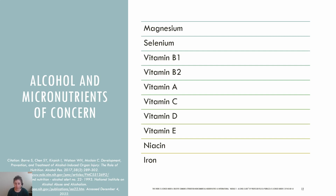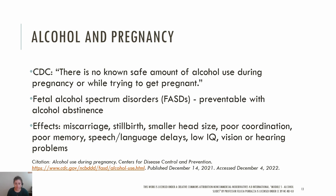Let's talk about alcohol in pregnancy. There is no known safe amount of alcohol use during pregnancy or while trying to get pregnant. Fetal alcohol spectrum disorders are 100% preventable with alcohol abstinence, as alcohol consumption passes through to the baby via the umbilical cord. Consuming alcohol during pregnancy can lead to miscarriage and physical and mental issues. Babies with fetal alcohol syndrome, which is the most severe, can have smaller head size, poor coordination, poor memory, speech-language delays, low IQ, vision or hearing problems, and abnormal facial features.